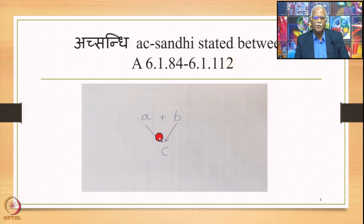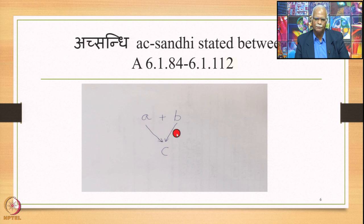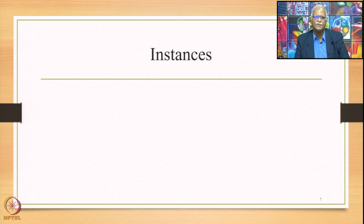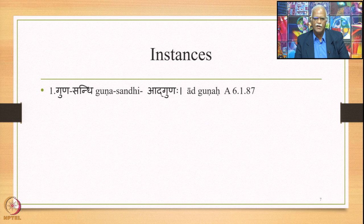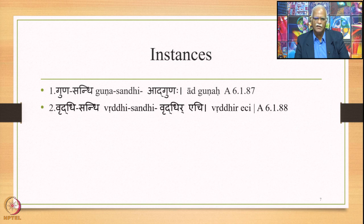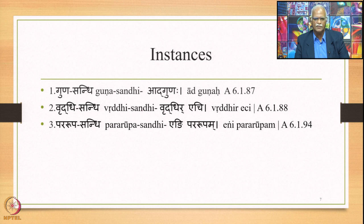One of the rules in this section applies and generates the output in the form of just C. In case of Ekasthanika Ekadesha, the input is A plus B and the output is C plus B. This is the primary difference between Ekasthanika Ekadesha and Dvishthanika Ekadesha. There are five instances of Dvishthanika Ekadesha. The first is Gunasandhi stated by Adgunaha 6.1.87. The second is Vridhisandhi stated by Vridhirechi 6.1.88. The third is Pararupasandhi stated by Engi Pararupam 6.1.94.